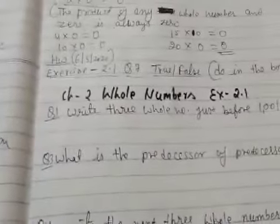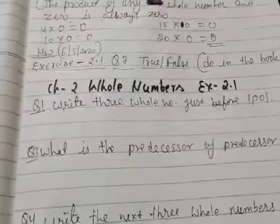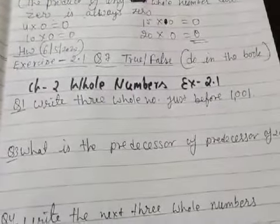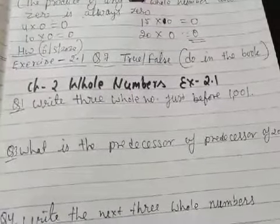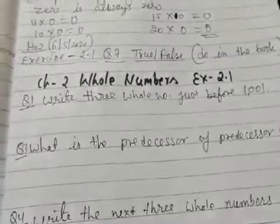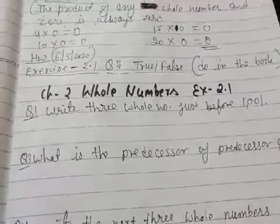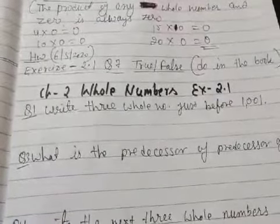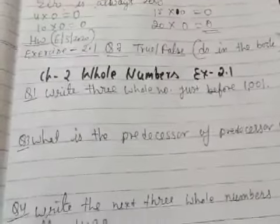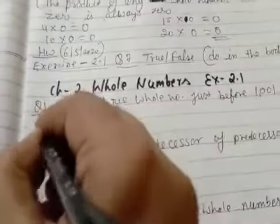Now, coming to question number 1: write 3 whole numbers just before 1001. We have to find out 3 whole numbers which are before 1001. How to solve?